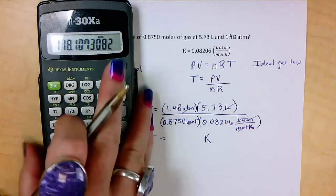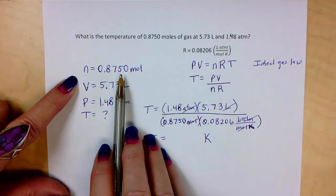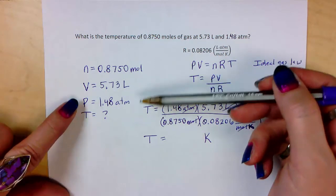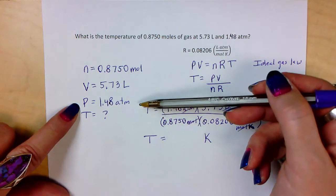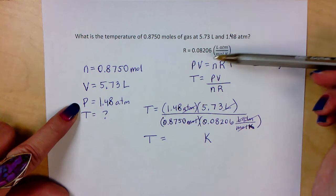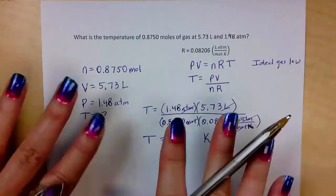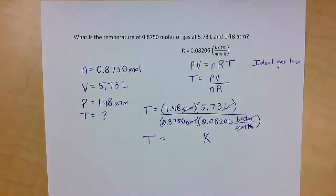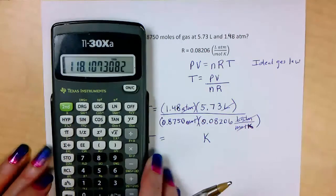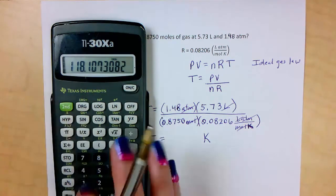Let's think about our sig figs. How many sig figs are in n? 4. How about our volume? 3. Our pressure? 3. And our constant R? 4, because zeroes in front don't count. We go with the least sig figs. So the least sig figs is 3. Let's look at our calculator again. So 118.10 doesn't round up, it's just 118.